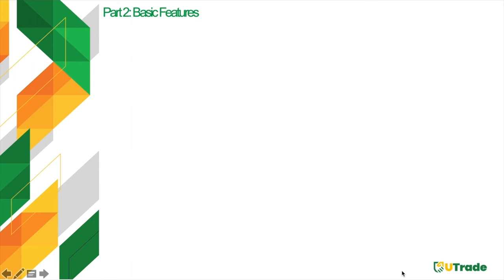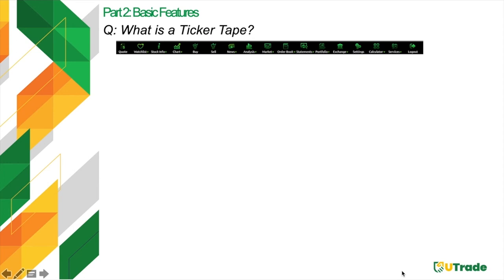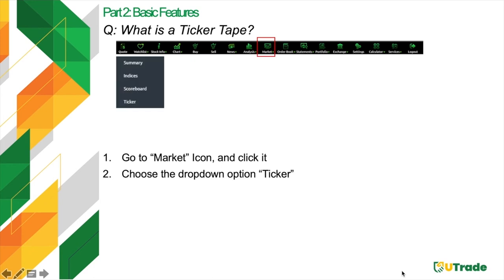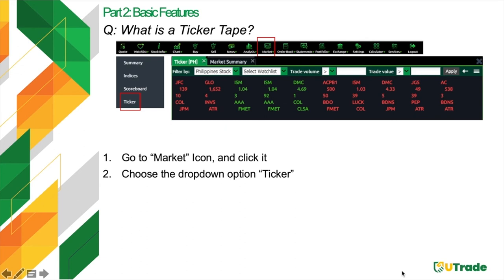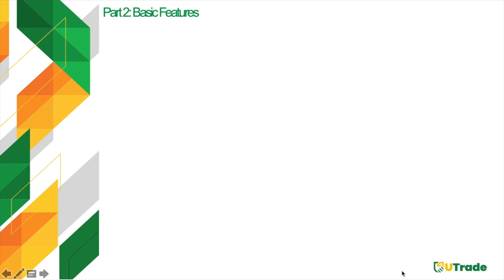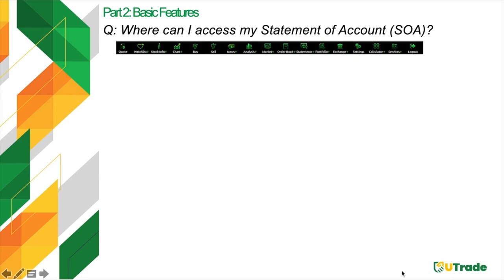Another basic feature is what we call the Ticker Tape or Ticker — where you will see real-time done transactions in the local market. If you accidentally removed it, access it again by going to the Market icon, clicking it, and selecting the Ticker option. You can customize it by applying filters and changing the ticker flow. You can also access your Statement of Account online. A statement of account is where you will find your buy and sell transactions, summary of holdings, running cash balance, and cash-ins and withdrawals. Dividends will also reflect on your statement of account.